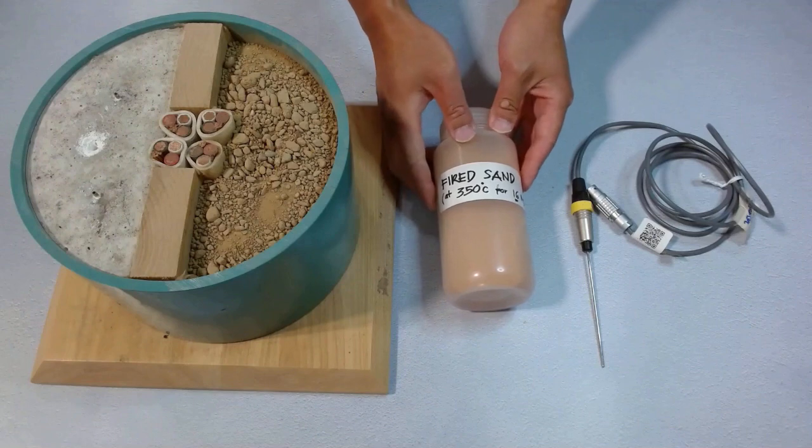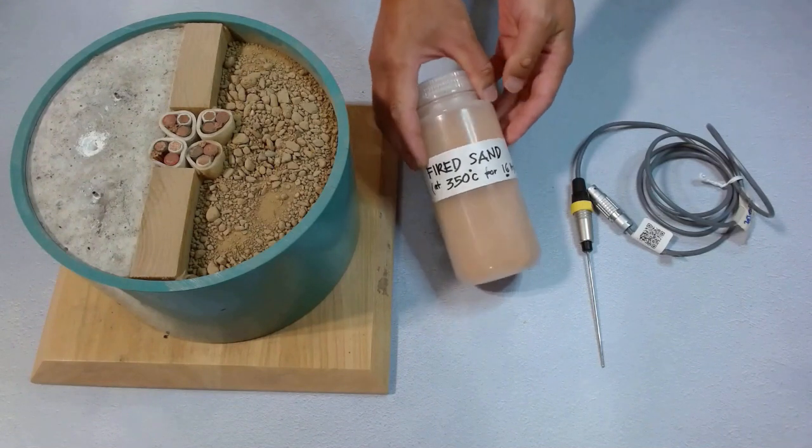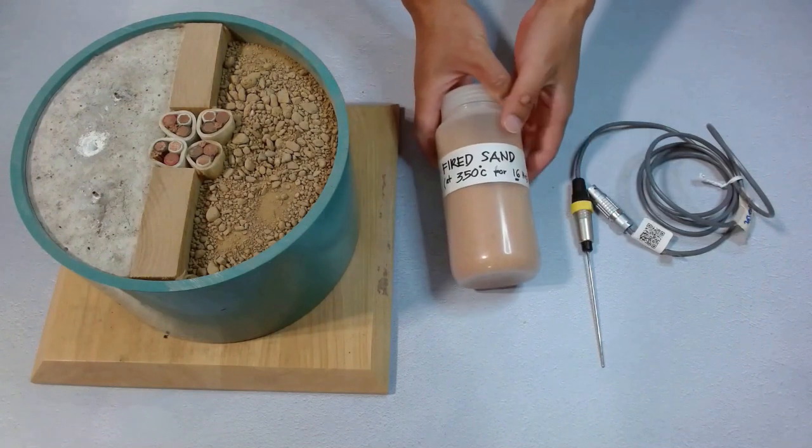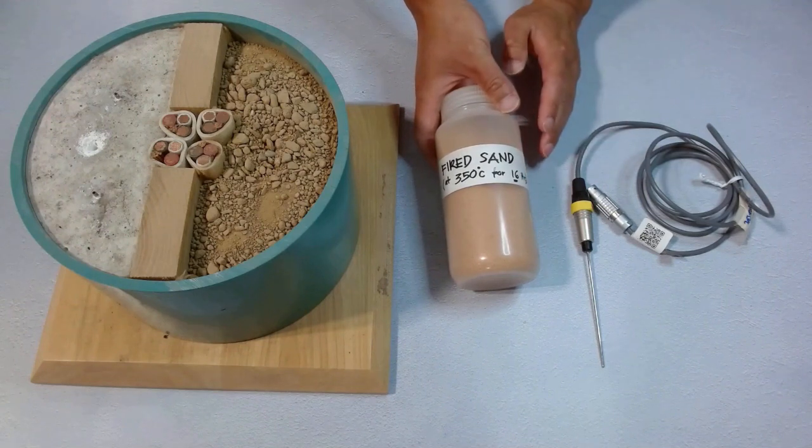Now we have an easy case of using the TLS100 sensor. This is fire sand. It is low in moisture, it doesn't have any pebble or rock in it, so the needle can go in and out pretty easily.